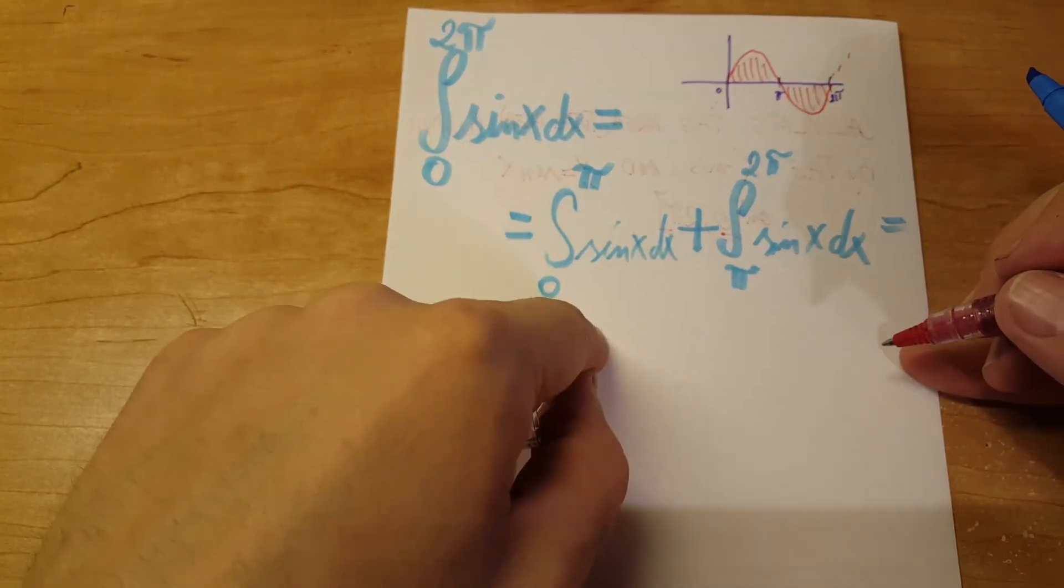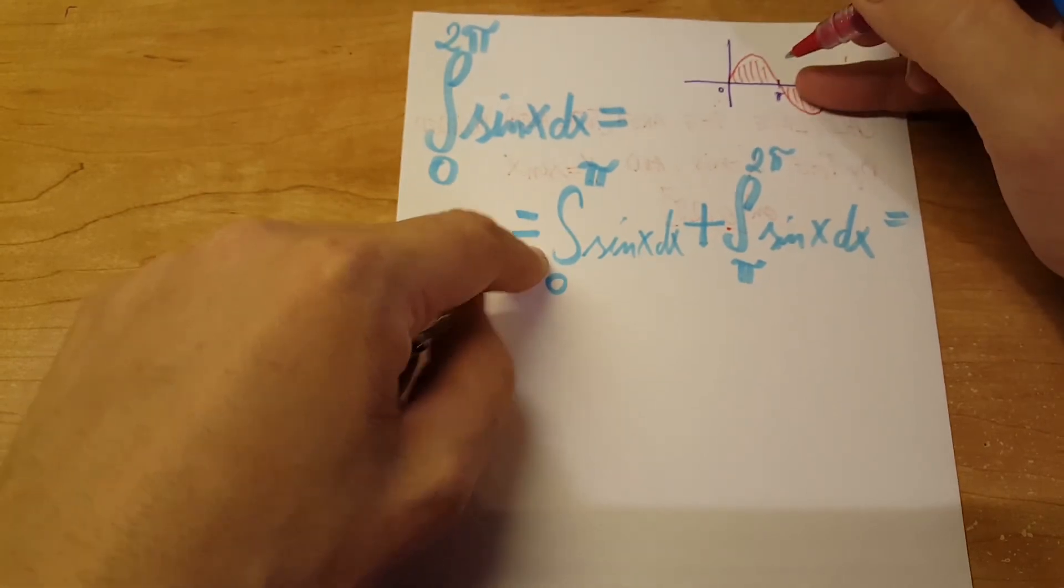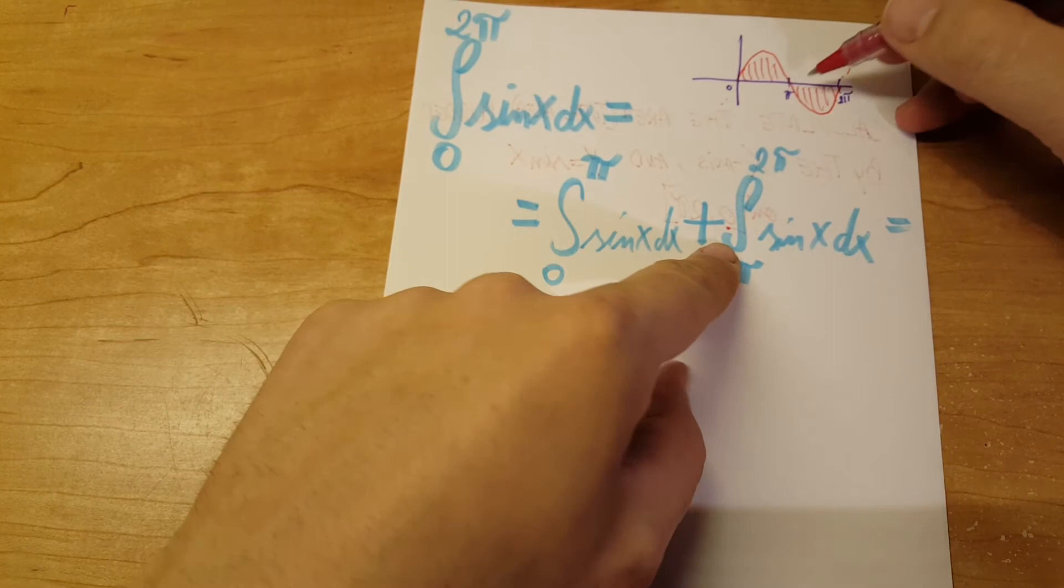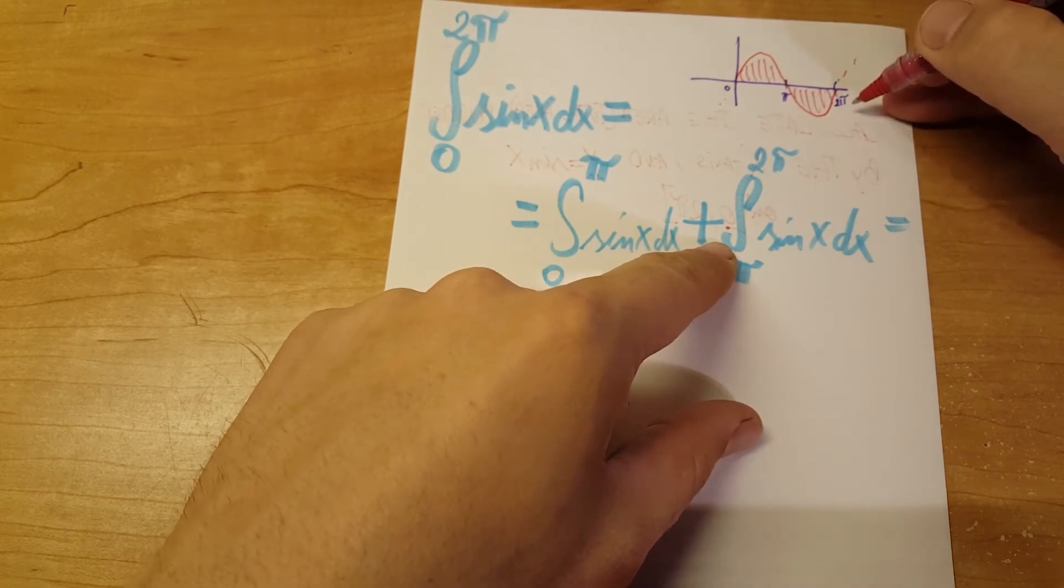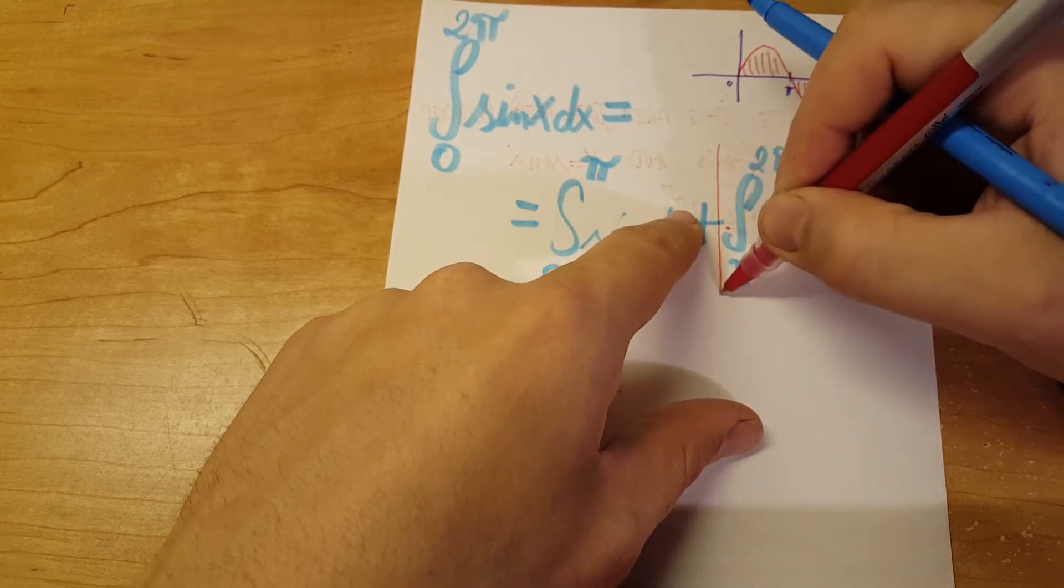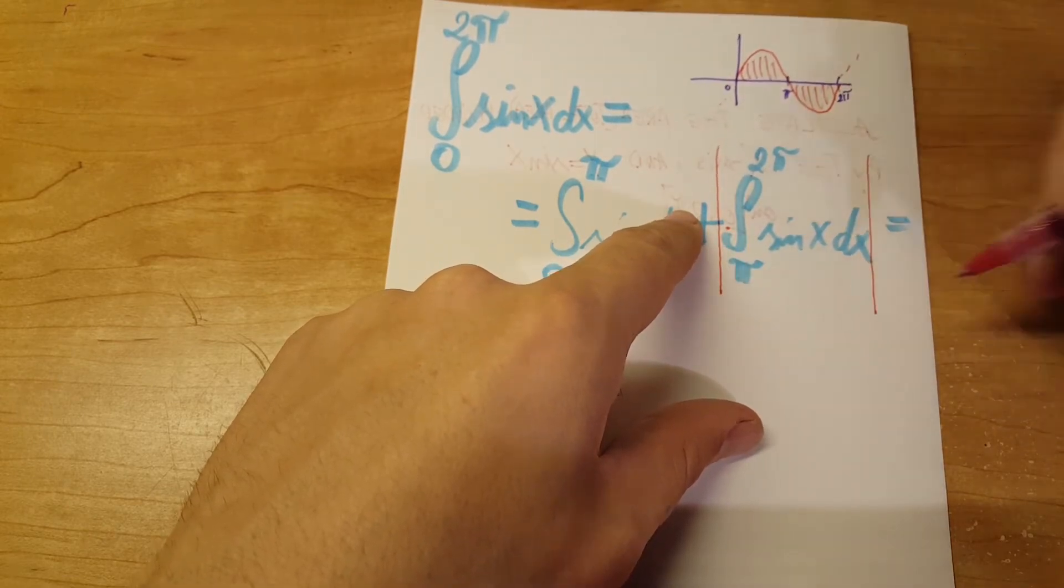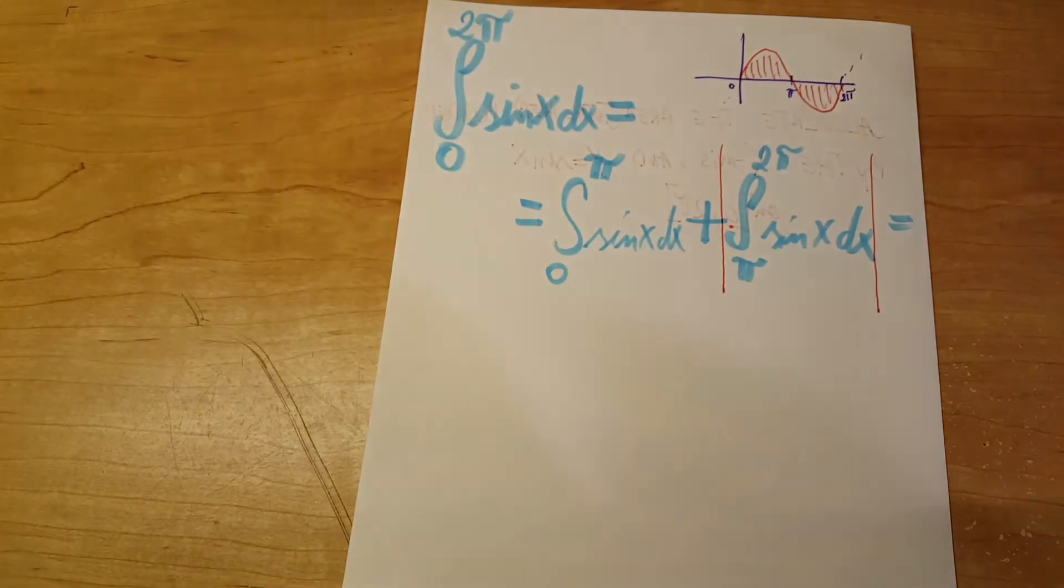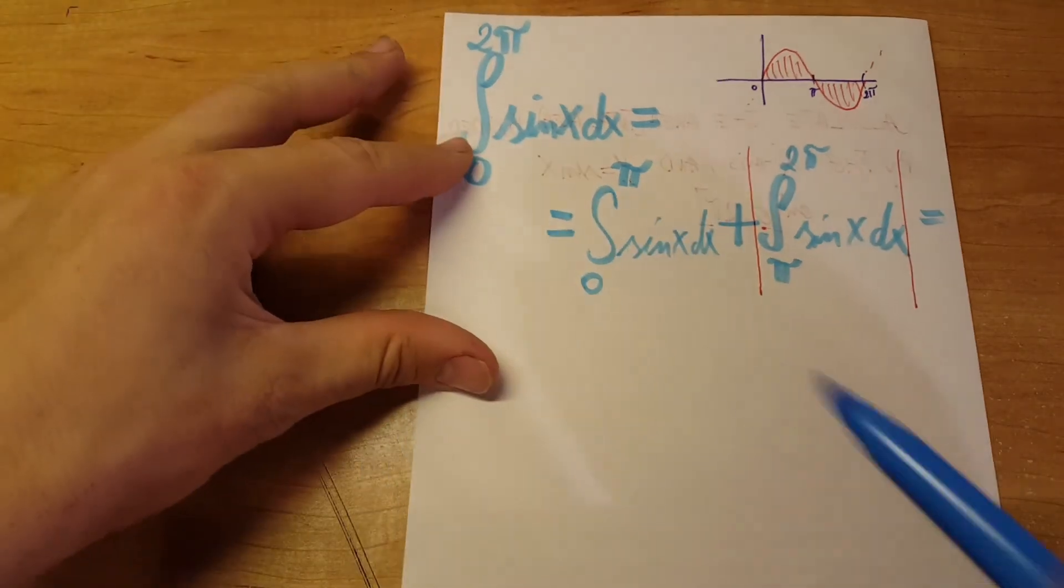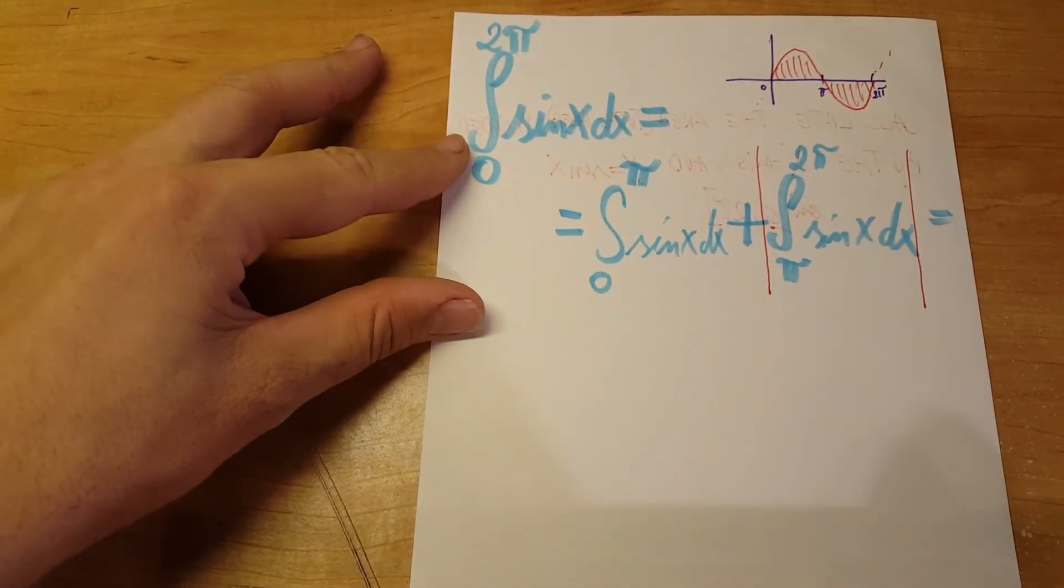So we broke it in two pieces. From zero to pi, it's already positive, so we're gonna leave it alone. From pi to two pi, in order to not be negative anymore, we're just gonna put it in absolute values. This way both values are positive, we can add them up, and we're gonna get the total area.